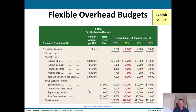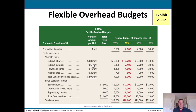Here we see the flexible overhead budget. We've got production in units. The variable amount per unit: indirect labor $0.80 per unit, indirect materials $0.60 per unit, power and lights $0.40 per unit, maintenance $0.20 per unit — for a total variable overhead cost of $2.00 per unit. At 70% capacity: 3,500 production units; $0.80 × 3,500 = $2,800 indirect labor; and at 80% capacity: 4,000 units giving $3,200, and so forth.